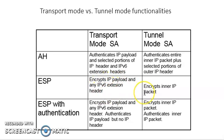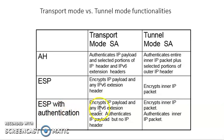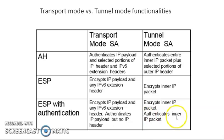For ESP in transport mode, it encrypts the IP payload and IPv6 extension headers. In tunnel mode, ESP completely encrypts the inner IP packet. For ESP with AH — that is, ESP with authentication — in transport mode it encrypts the IP payload and any IPv6 extension headers, then authenticates the IP payload but not the IP header. In tunnel mode, it authenticates and encrypts the entire inner IP packet.